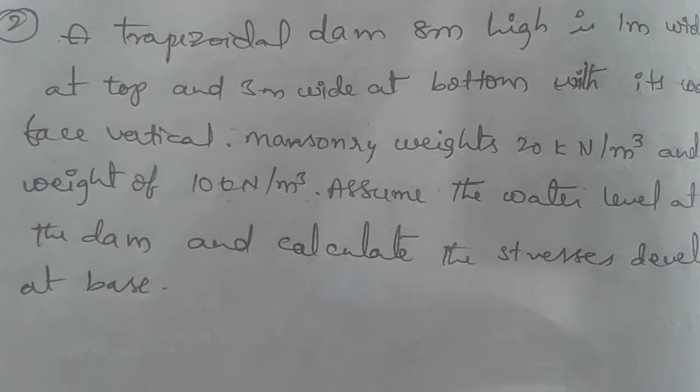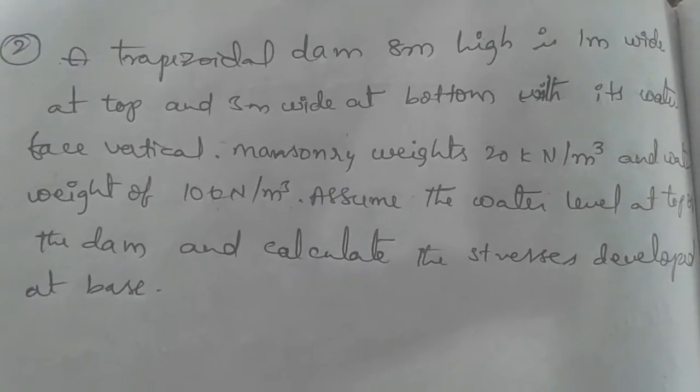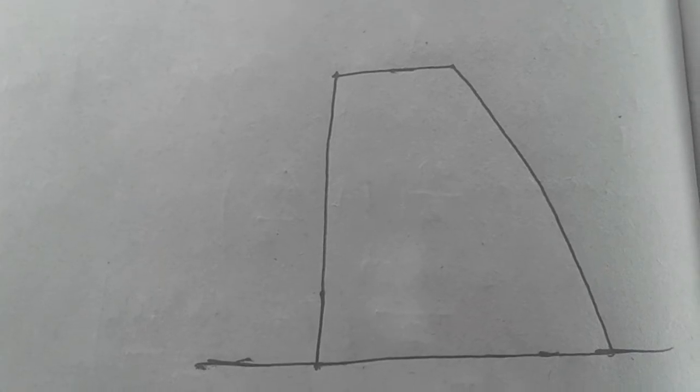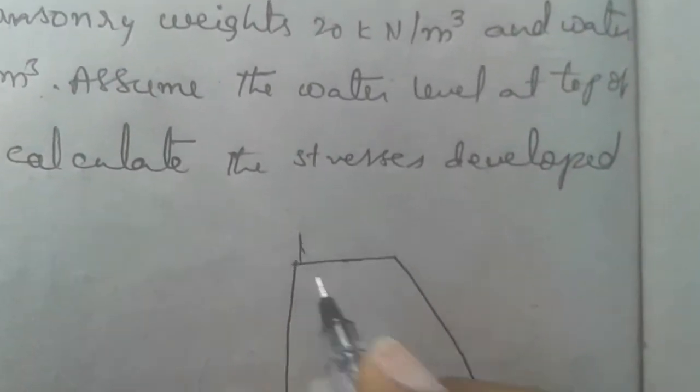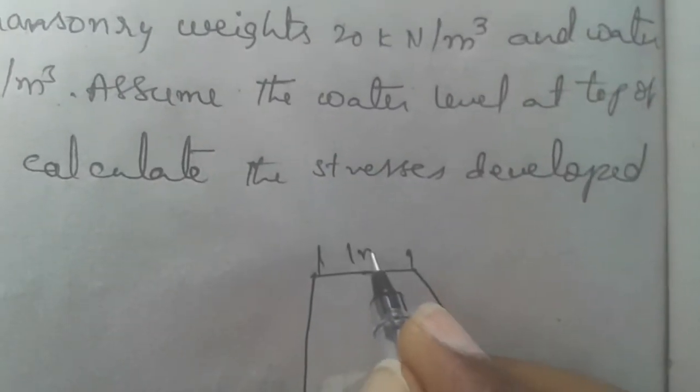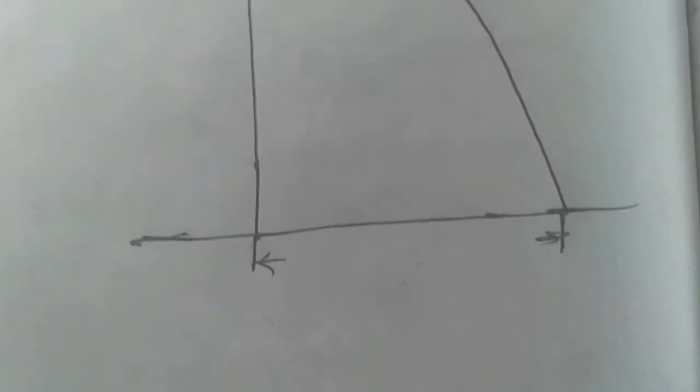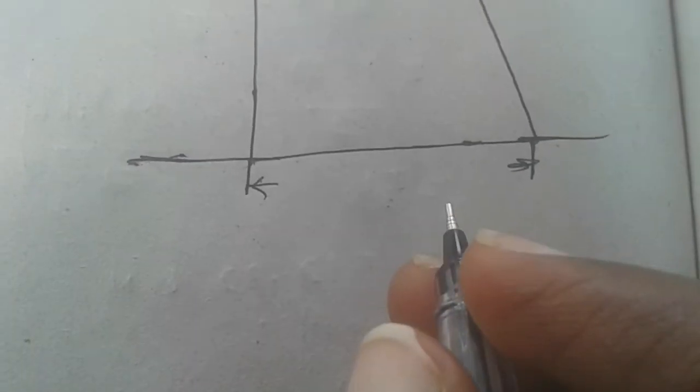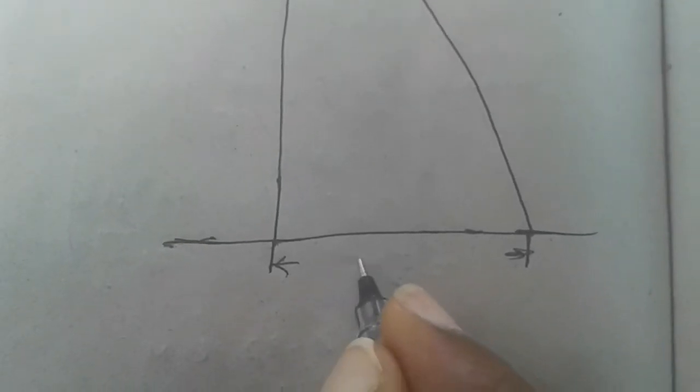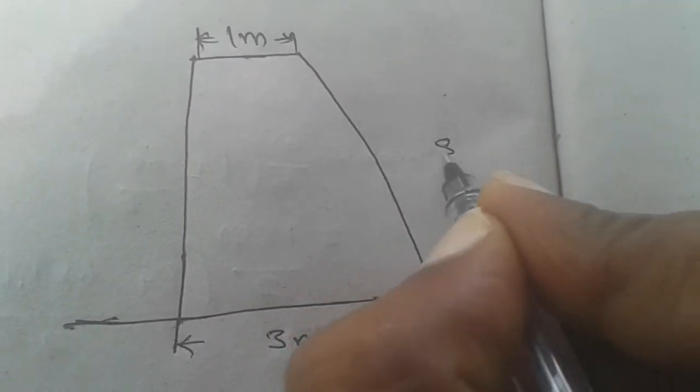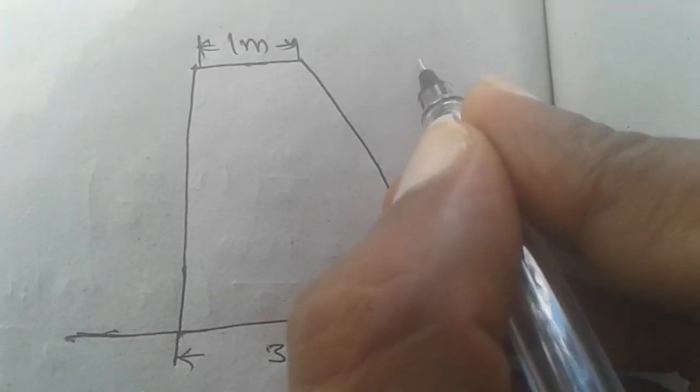Diagram is ready. At top it is 1 meter given in the question, and bottom width is 3 meters. Total head of the dam is here, this is 8 meters, taken as capital H.